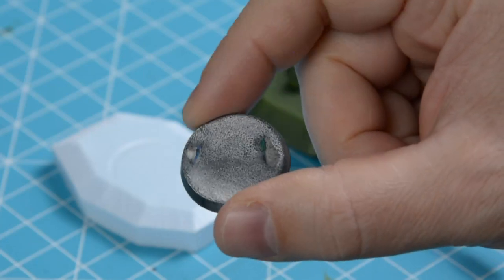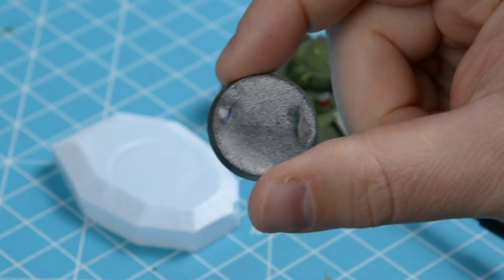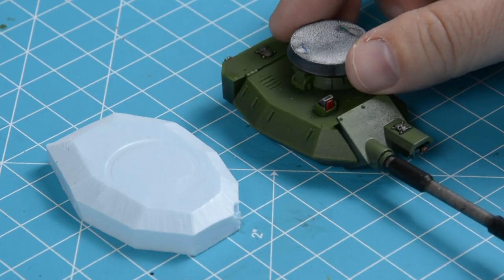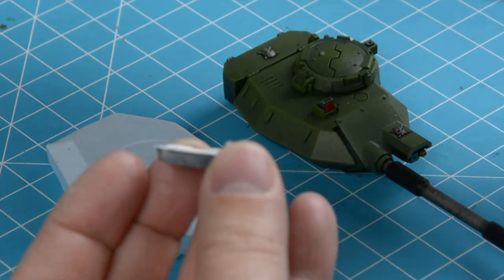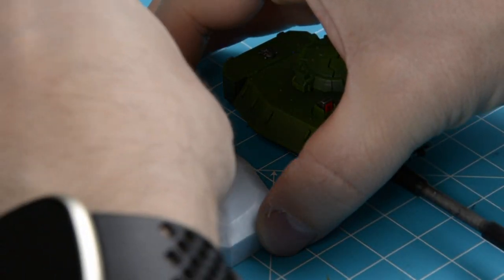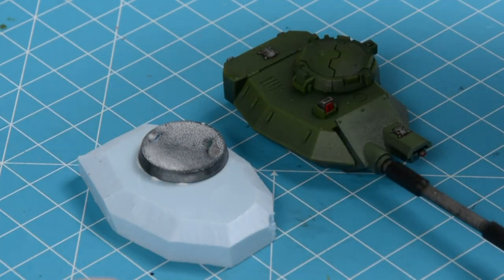For the hatch I'm gonna use a 25mm round base. And now we'll leave everything to dry for half an hour.